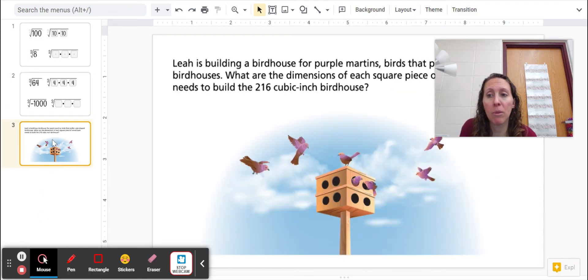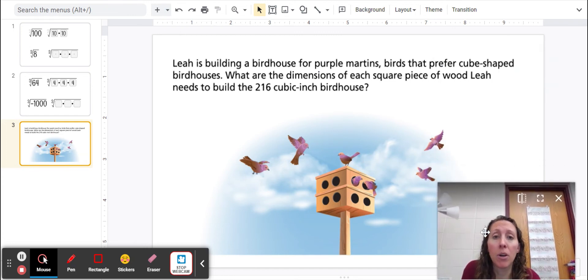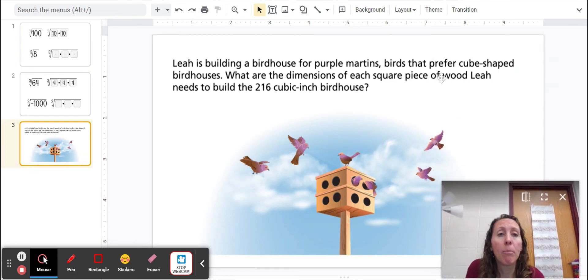Let's try a word problem. Leah is building a birdhouse for purple martins, birds that prefer cubed-shaped birdhouses.